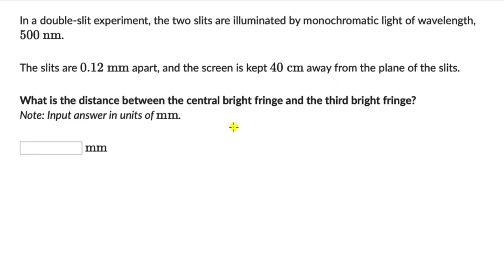Let's solve a couple of questions on fringe width in the double slit experiment. For this first one, the two slits are illuminated by a monochromatic light of wavelength 500 nanometers. The slits are 0.12 millimeters apart and the screen is kept 40 centimeters away from the plane of the slits. The question is to find the distance between the central bright fringe and the third bright fringe.